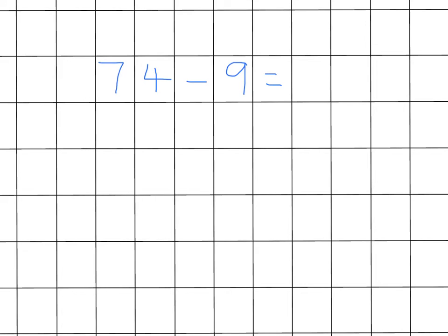Children find taking away 9 a little trickier, but we use the same strategy. 74 take away 10 equals 64. This time, though, we've taken away too many, so we need to pay one back. So, 64 add 1 equals 65.